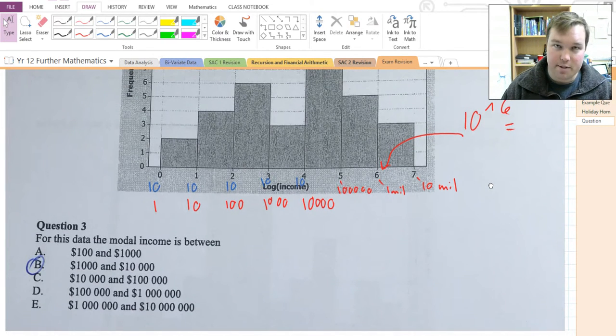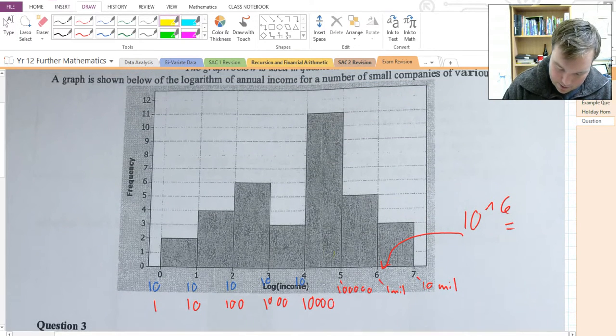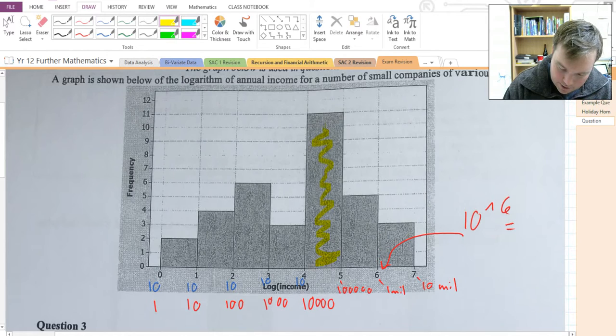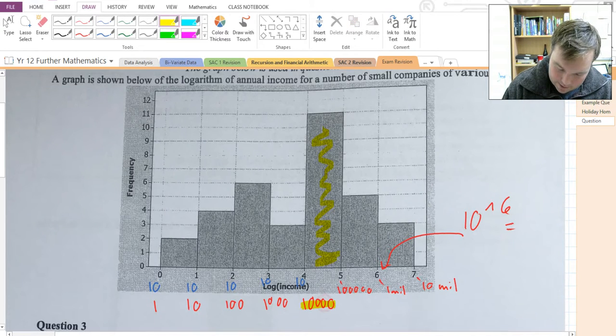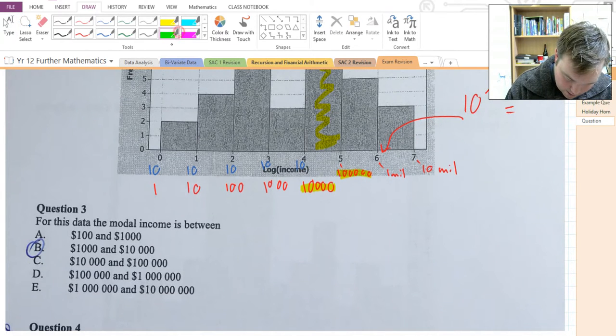So, the modal income is between, now modal is the most commonly occurring, and here we can see it's clearly that column there. So, the modal income is between the 10,000 and the 100,000. So, your answer here should have been C.